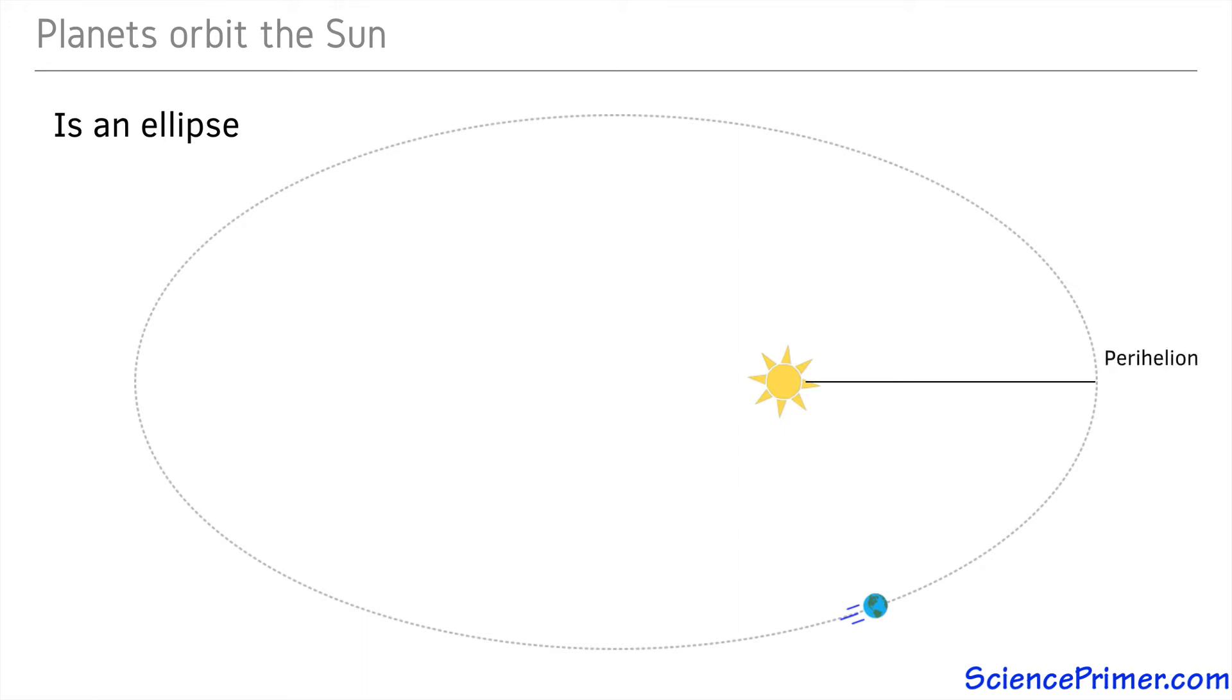The point in the orbit when a planet is closest to the sun is called perihelion. For Earth, this occurs on January 4th. The point in the orbit where the planet is furthest from the sun is called aphelion, which is on July 4th for us.